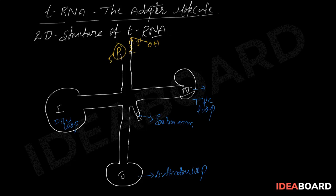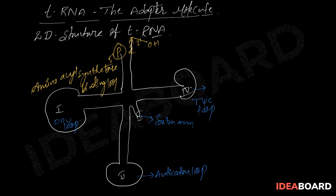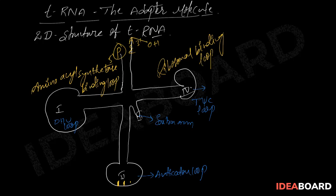The dHU loop is the aminoacyl synthetase binding loop — aminoacyl synthetase is an enzyme that binds here. The tSiC loop is the ribosomal binding loop. The anticodon loop contains three nitrogen bases that act as the anticodon.